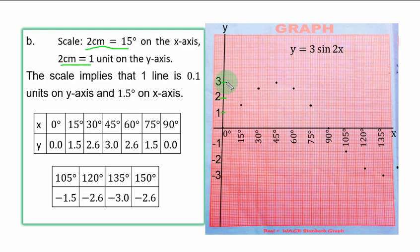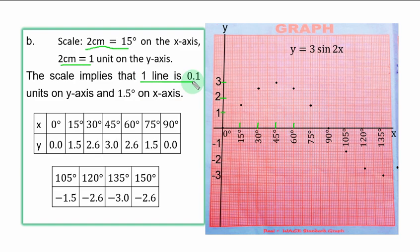On the s-axis, 2 blocks equals 15 degrees, the next 2 equals 30 degrees, the next 2 is 45, then 60, 75, 90, 105, 120, 135, 150 degrees. This means 1 line equals 0.1 units on the y-axis and 1.5 degrees on the s-axis.